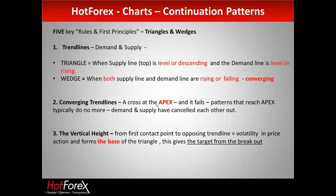Third rule: the vertical height from the first contact point to the opposing trend line gives us volatility — that's called the base of the triangle, and this gives us a target for the triangle. Those are the first three rules.